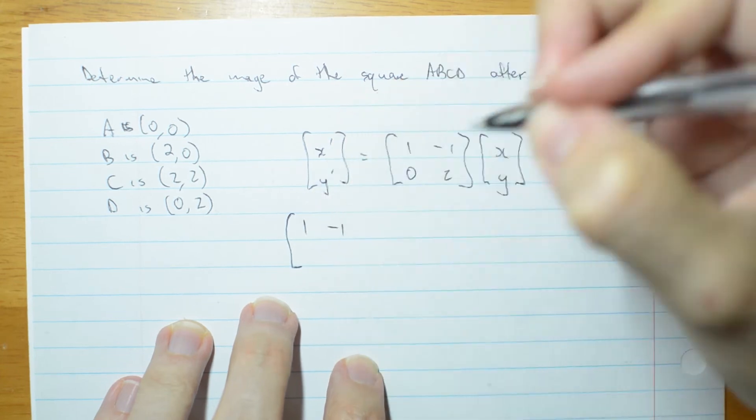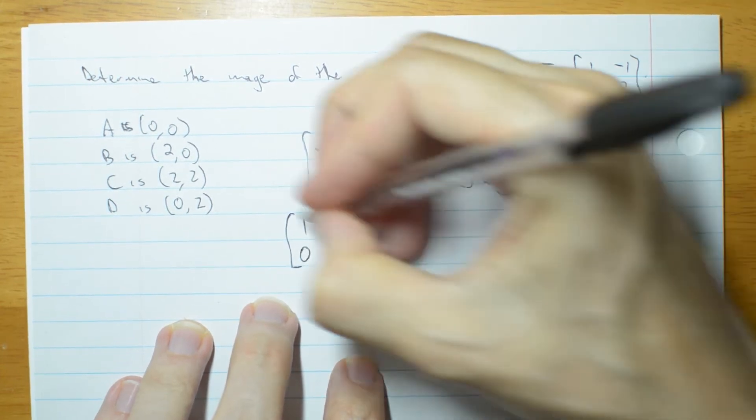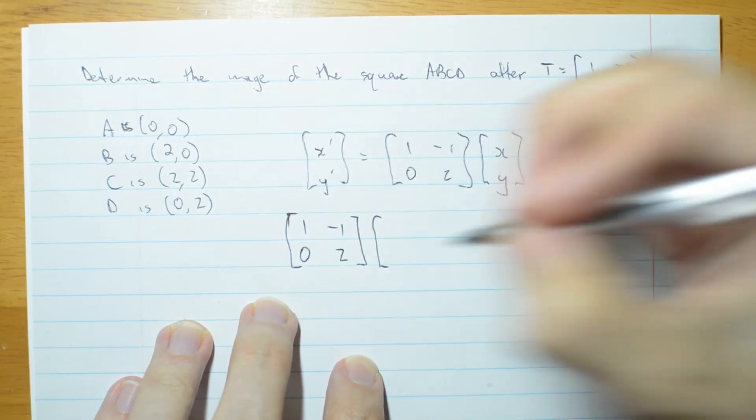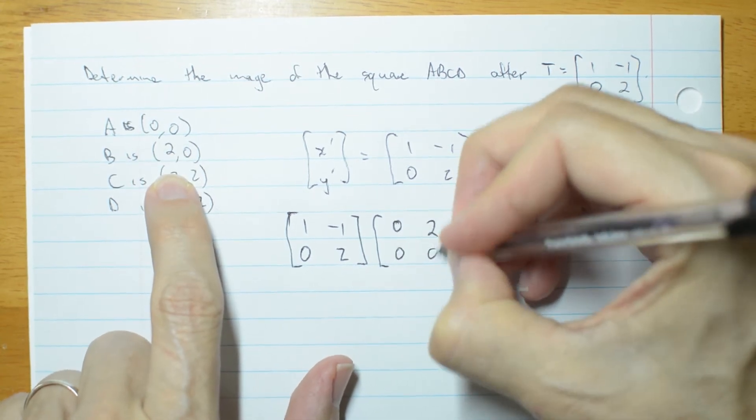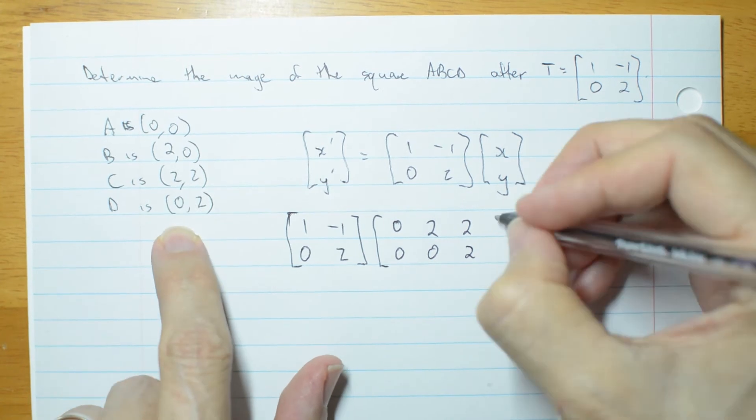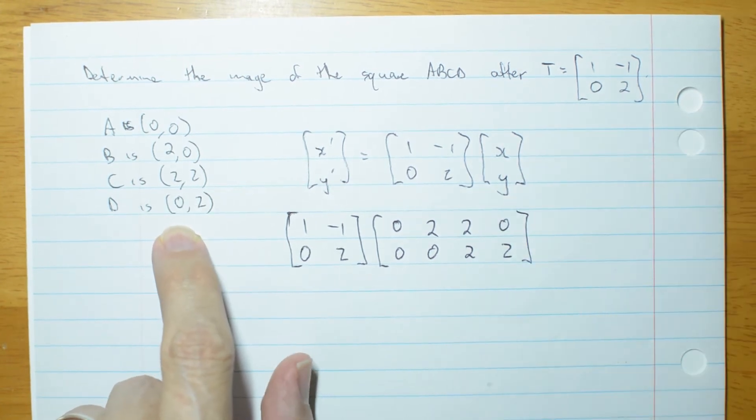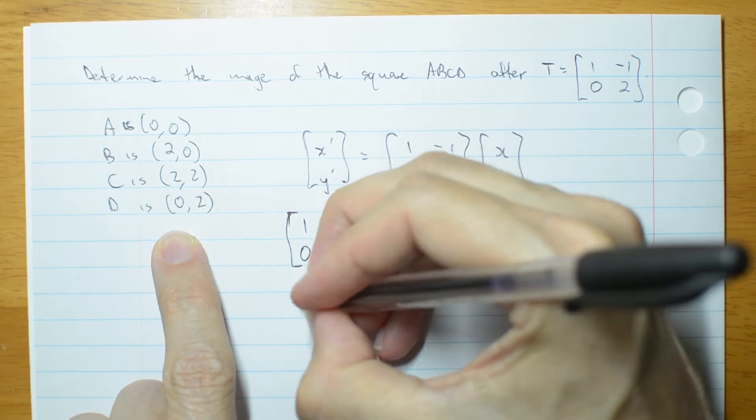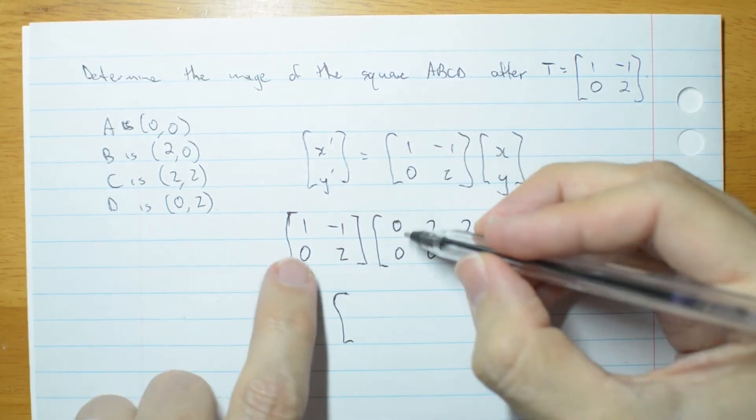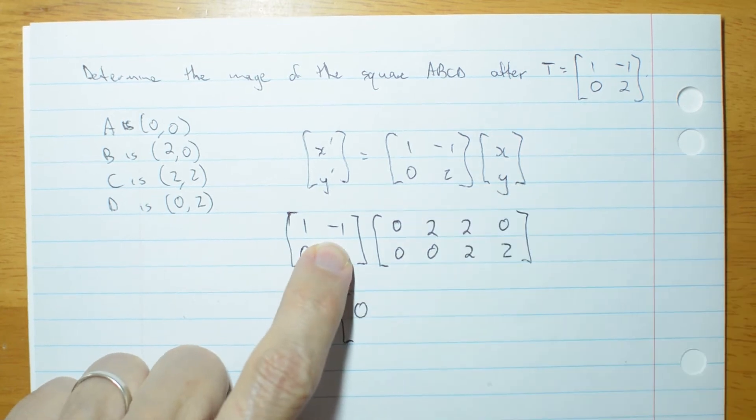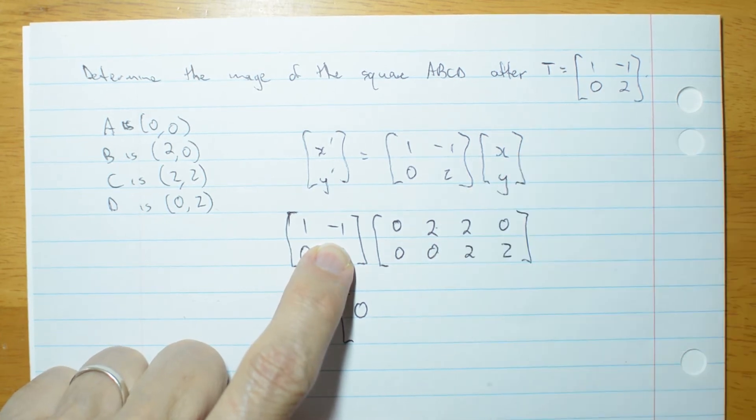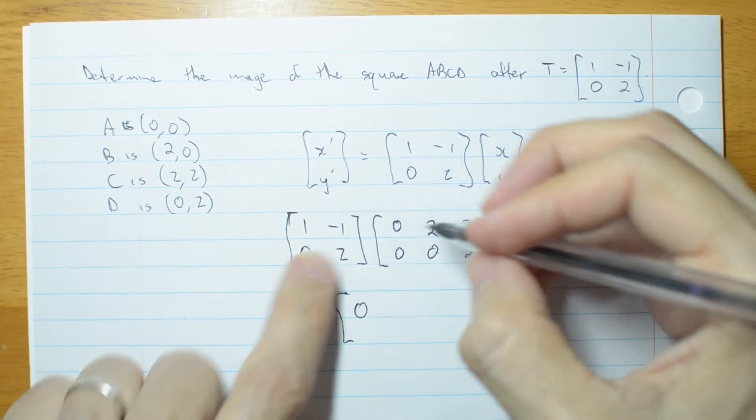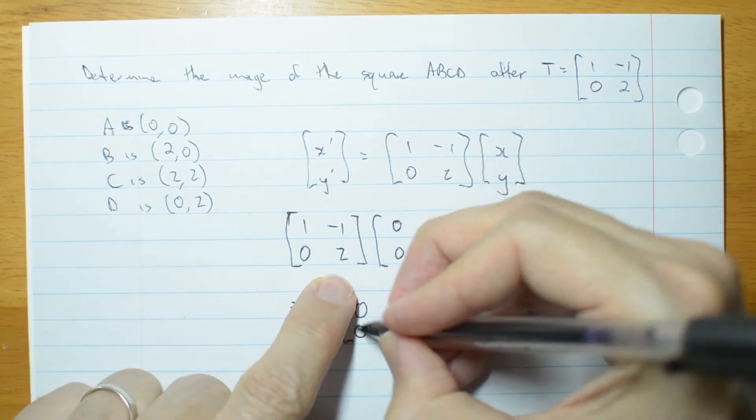I'm going to go my matrix [1, -1; 0, 2] times by A's coordinates, B's coordinates, C's coordinates and D's coordinates. And then in one matrix multiplication I'm going to get 0, 0. Origin hasn't moved. Let me go down so you can see each coordinate forming at a time. 0, 0, 0. Origin hasn't moved. That is A primed.